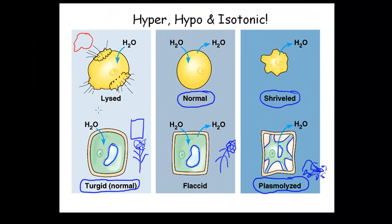So to summarize: in the hypotonic solution, more solute is inside so water moves in. The isotonic solution has water moving in and out equally. The hypertonic solution has water moving out. Remember, the cell is exactly opposite the solution — if it's a hypertonic solution outside, you've got a hypotonic cell. If it's isotonic, you still have isotonic. If it's hypotonic outside, it's hypertonic inside because water moves to where hyper is — hyper means more solute, and water moves toward the solute.